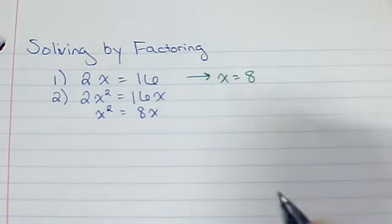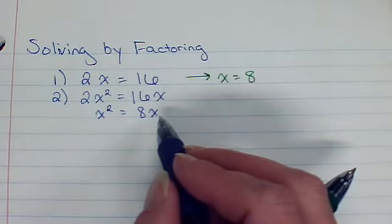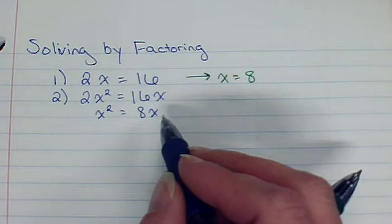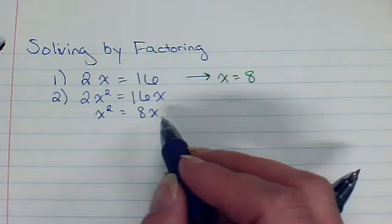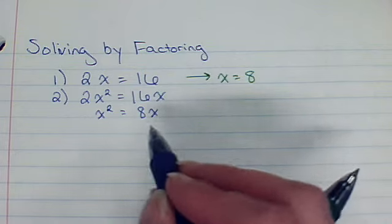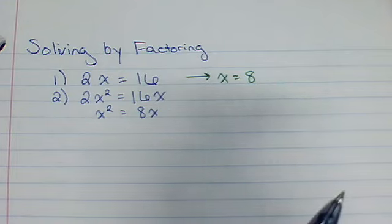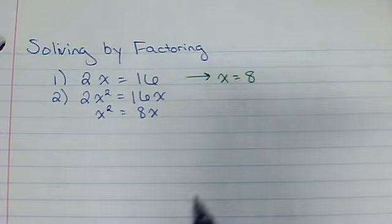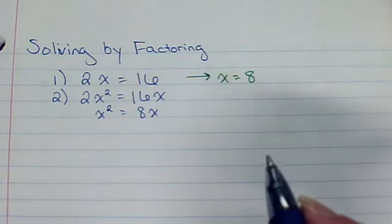You would get x squared equals 8x. But I cannot divide both sides by x because there is a possibility that x could be 0. If x is 0, it is against the law to divide by 0, so we can't do it. Never divide both sides of an equation by a variable, unless you're absolutely sure it's not 0. And if you have a variable, we don't know what it is yet.